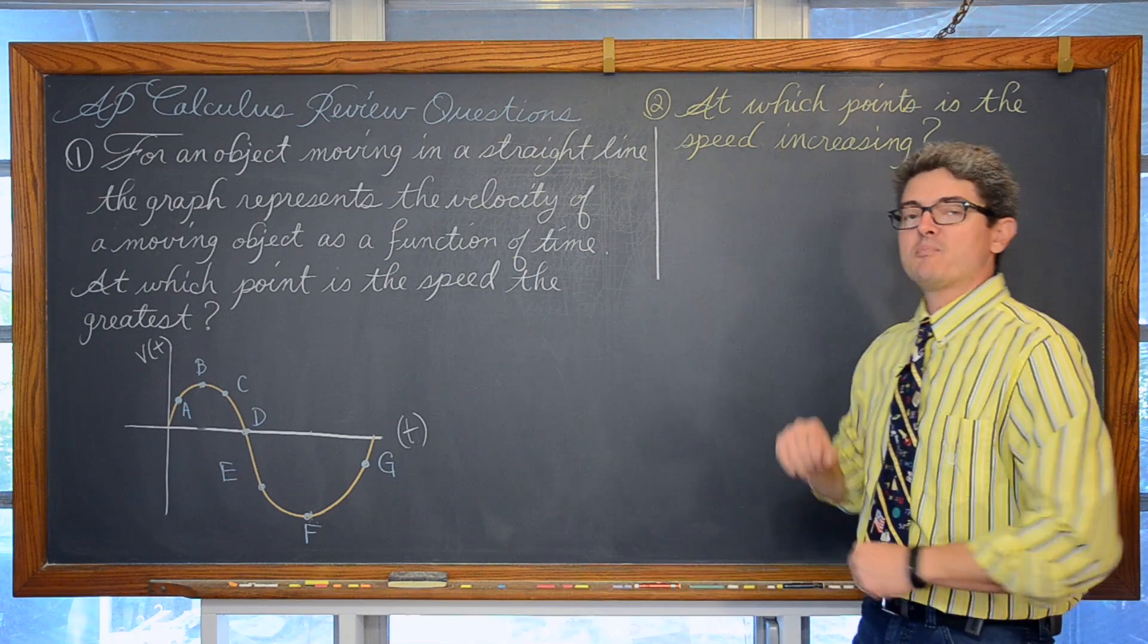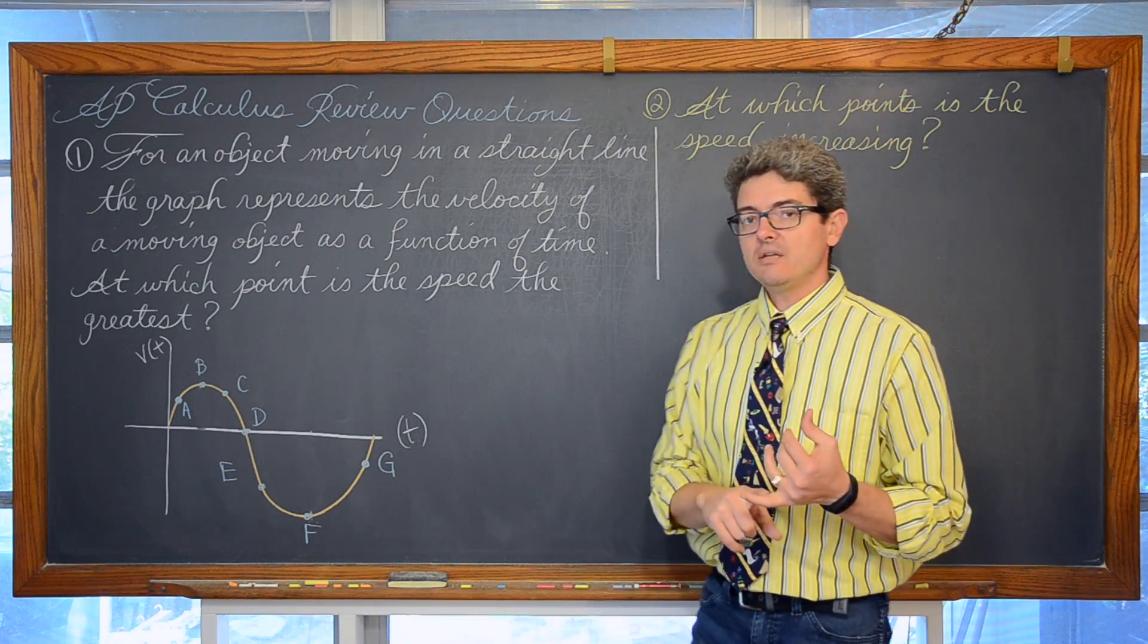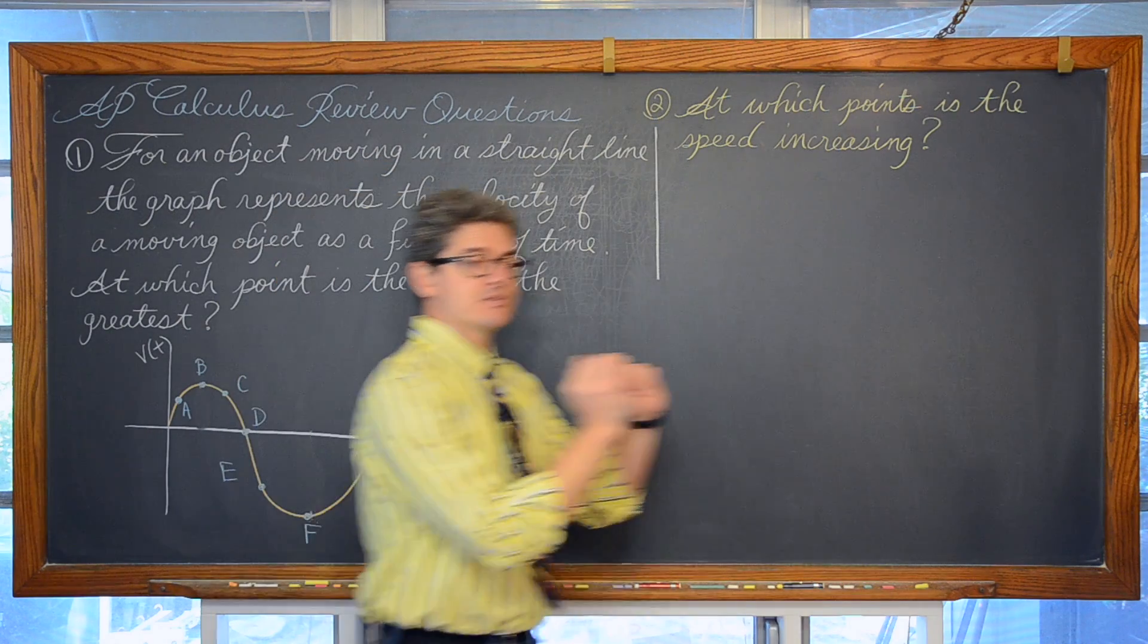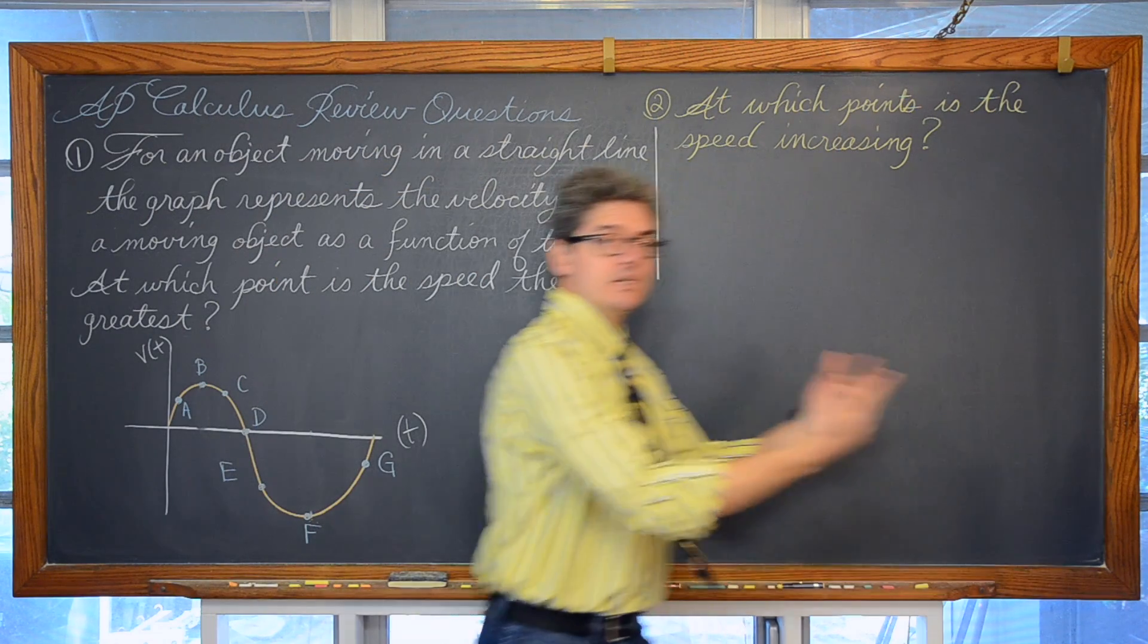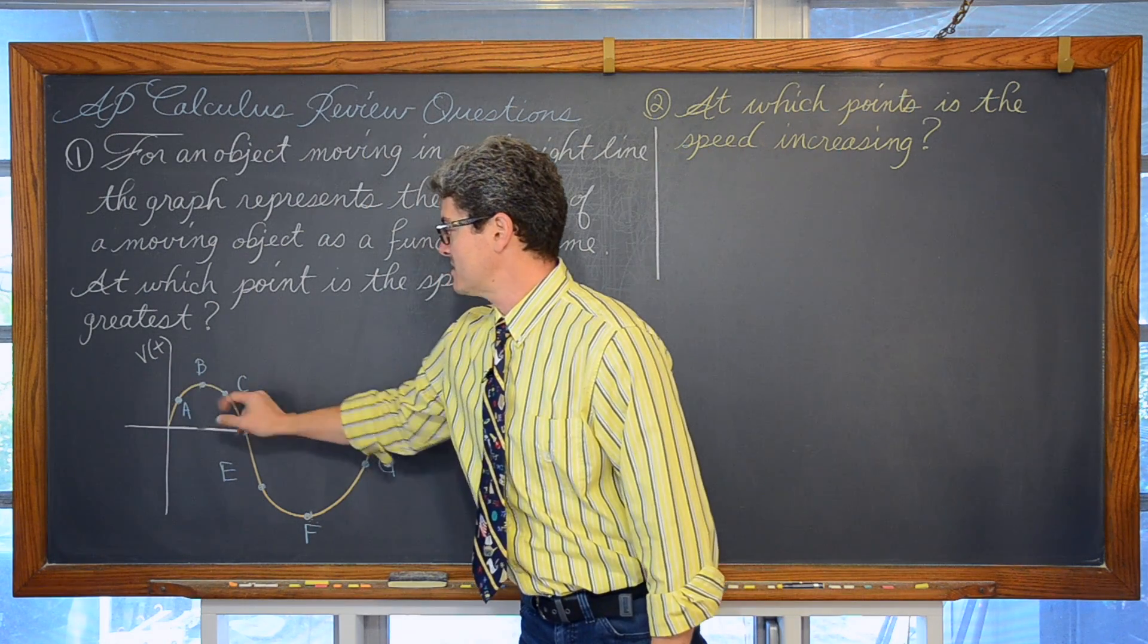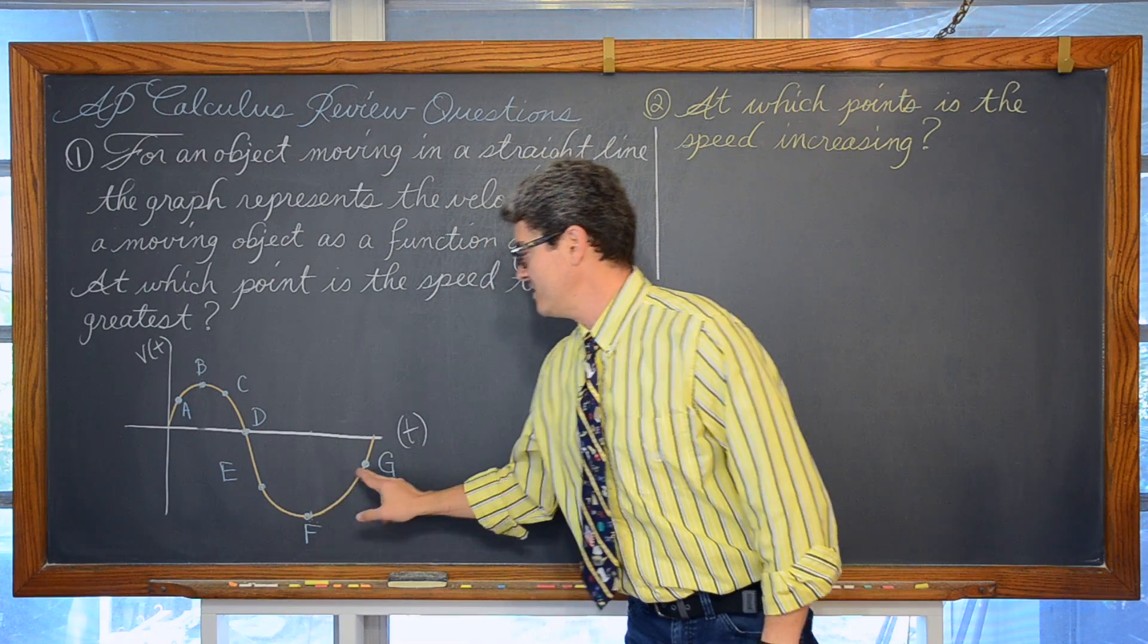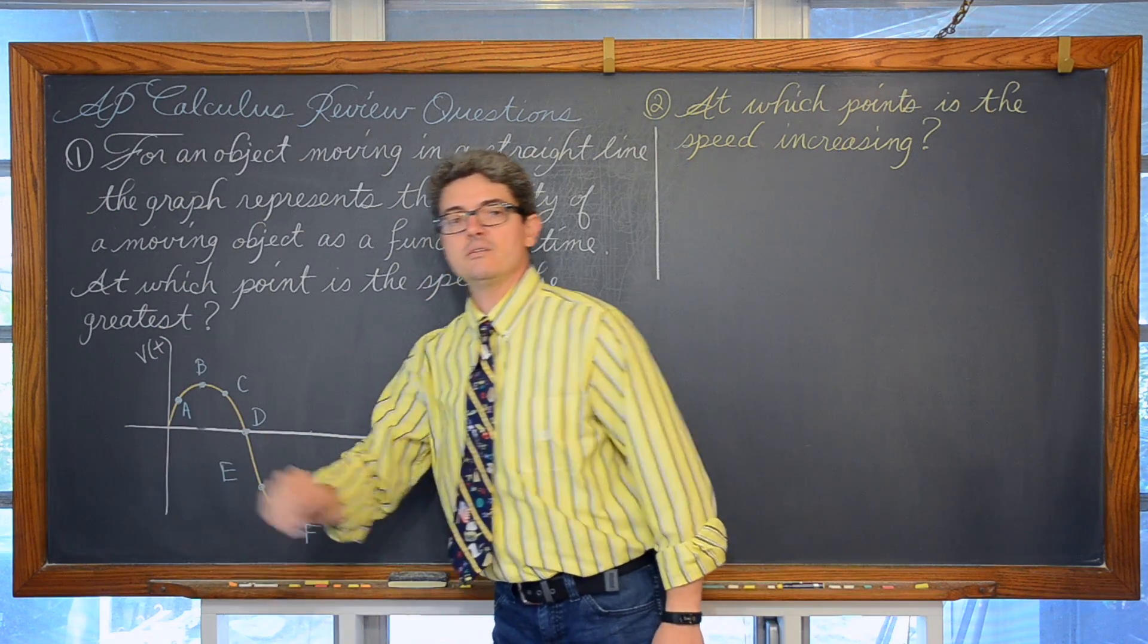So at which point is the speed the greatest? Well velocity is positive if you are moving to the right or up and negative if you are moving backwards. So we have got some positive velocities here at points a, b, and c and negative velocities at points e, f, and g because remember the vertical scale is velocity.